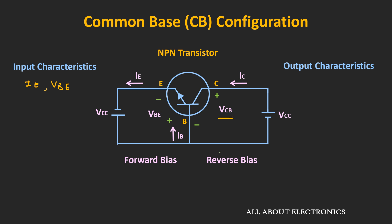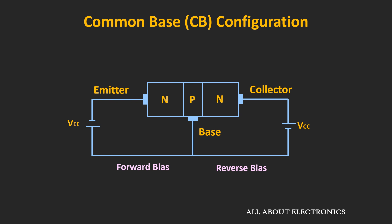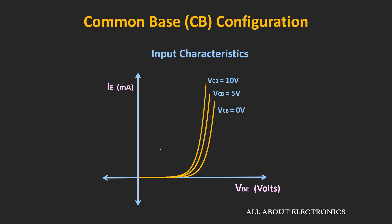Throughout our discussion, we will talk about the NPN transistor. Looking at the input characteristics of the common base configuration, there are three curves for different values of VCB — for each curve, the value of VCB has been kept constant. These curves look similar to the forward characteristic of the PN junction diode, because the PN junction on the input side has been forward biased.